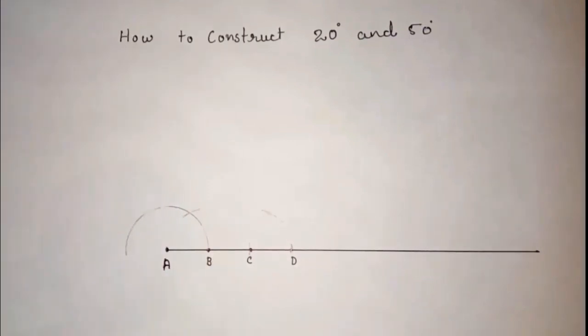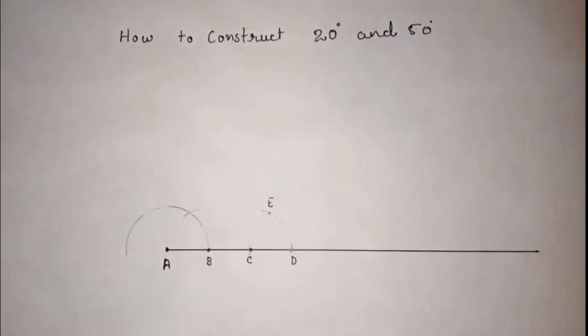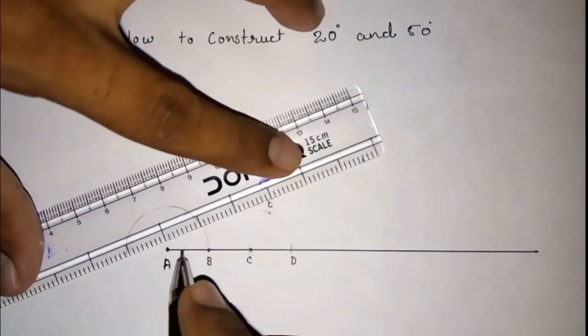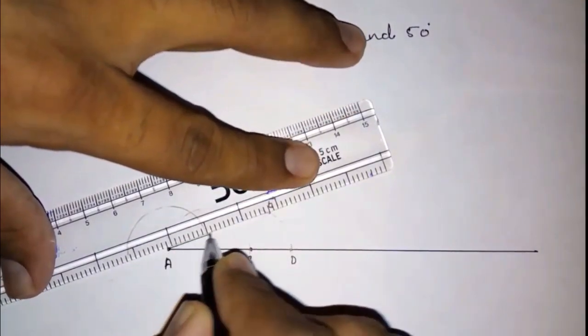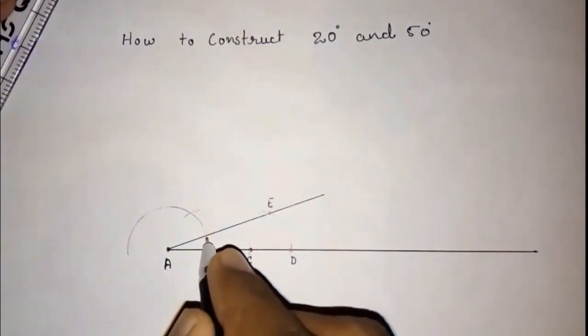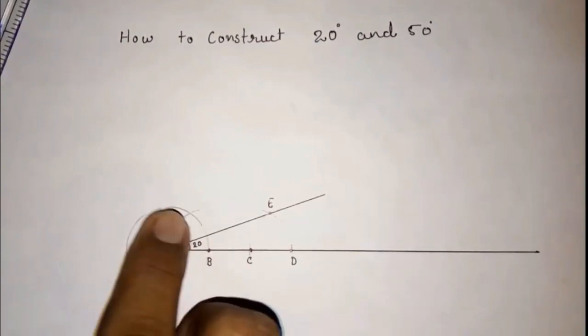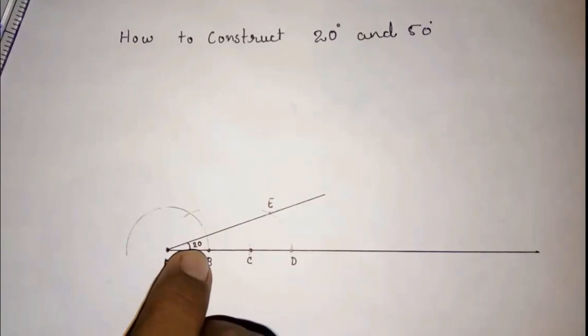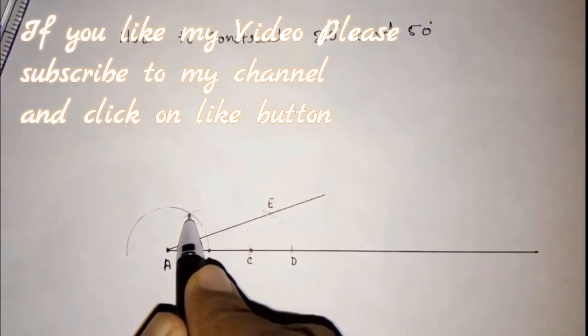I am giving a name to this intersection point also. Now draw a line from A to E. This will be your 20 degree. Now you want to construct 50 degree. This is 60 arc.